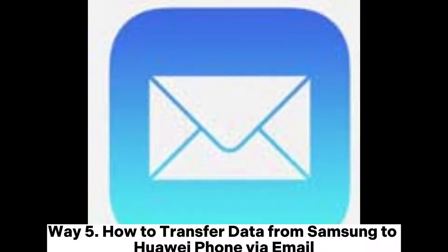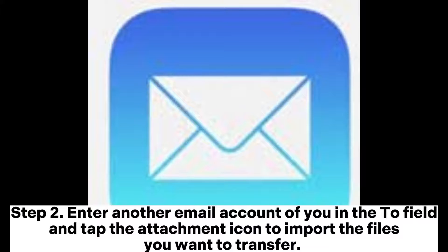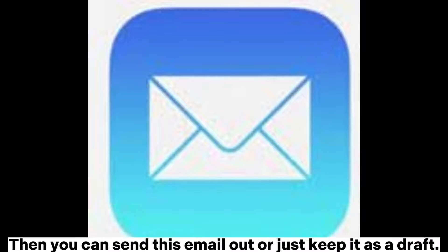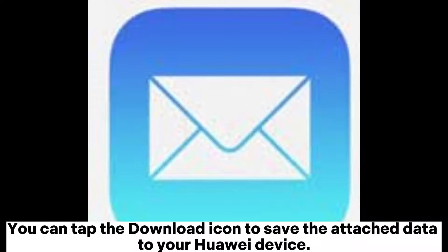Way 5: How to transfer data from Samsung to Huawei phone via email. Step 1: Launch the email app on your Samsung phone and click Compose to draft a new email. Step 2: Enter another email account of yours in the To field and tap the attachment icon to import the files you want to transfer. Then send this email out or just keep it as a draft. Step 3: Install the email app on your Huawei phone, sign in with the same email account, and access the exact email from Draft or Inbox. You can tap the download icon to save the attached data to your Huawei device.